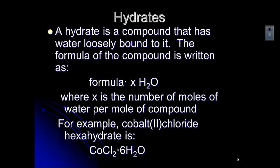So X is that number of moles of water per mole of compound. For example, cobalt II chloride hexahydrate is CoCl2 with a little dot, like we use in multiplication, 6H2O. So for every mole of cobalt II chloride, there are 6 moles of water.